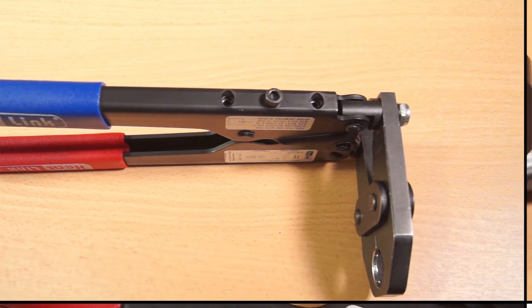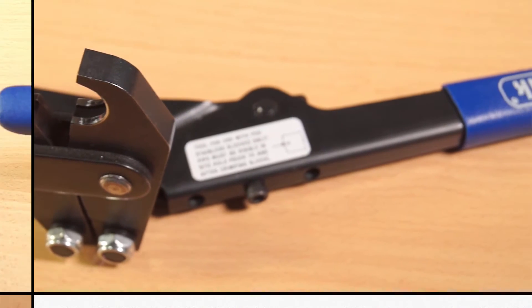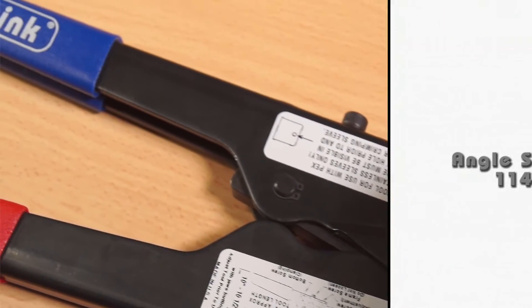Heat link press tools are used to create a watertight seal between heat link PEX tubing and fittings using stainless steel sleeves. For proper and consistent presses, each tool must be calibrated as necessary using the following procedure.